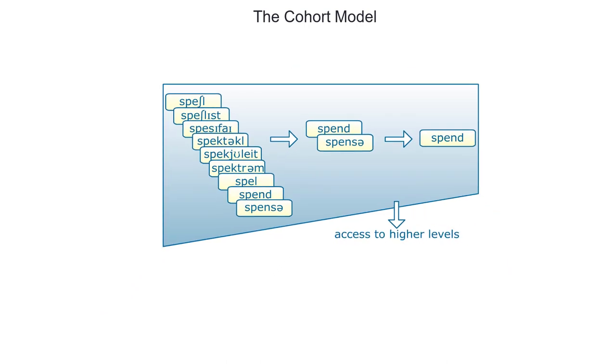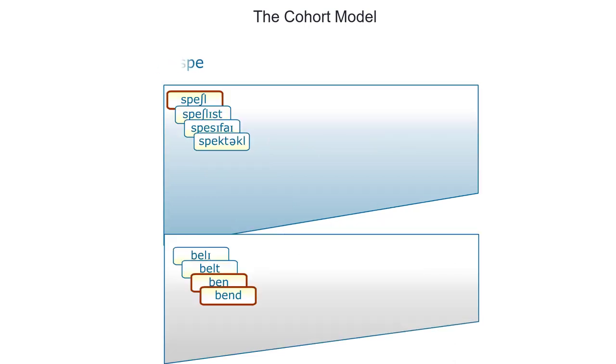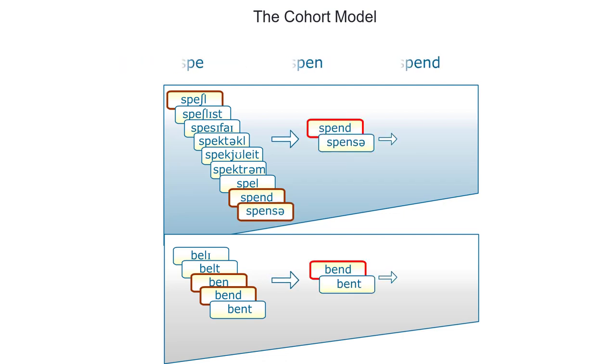In an extended version of the cohort model, several cohorts that share the main perceptual specifications of the access unit are activated simultaneously. This extended version accounts for our ability to identify even incomplete input.